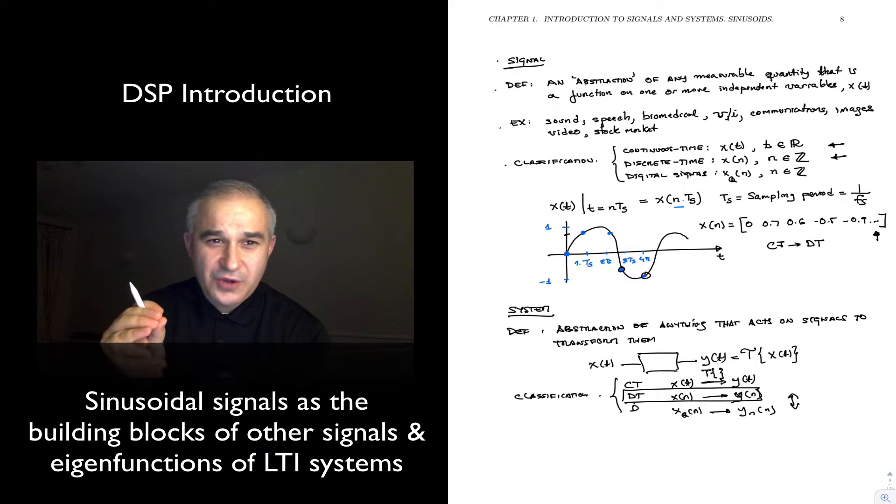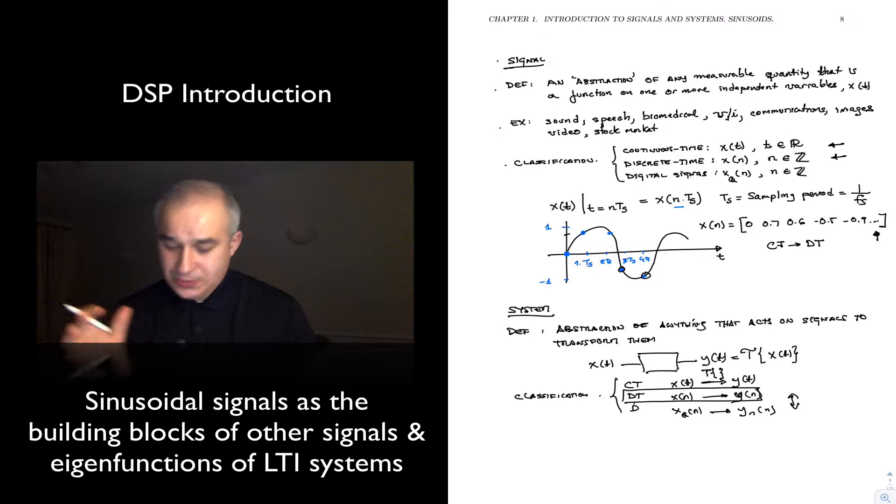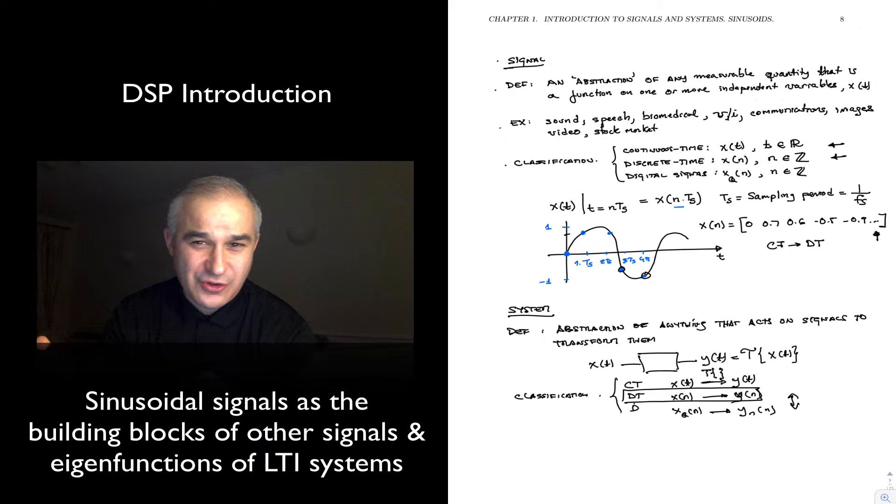Hello. So we just saw that a signal is an abstraction of any measurable quantity. There are signals everywhere, from speech to the communication signals that we use, voltage currents, anything that is in the analog world, anything that is inside your computer.